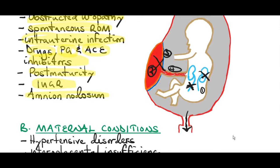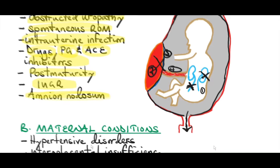Amnion nodosum has also been associated with oligohydramnios. In amnion nodosum, there is failure of secretion by the cells of the amnion covering the placenta to produce amniotic fluid. Because of the nodules in the amnion, there is failure of secretion by these cells, resulting in reduced amniotic fluid. Importantly, amnion nodosum can cause oligohydramnios, and oligohydramnios can also cause amnion nodosum.